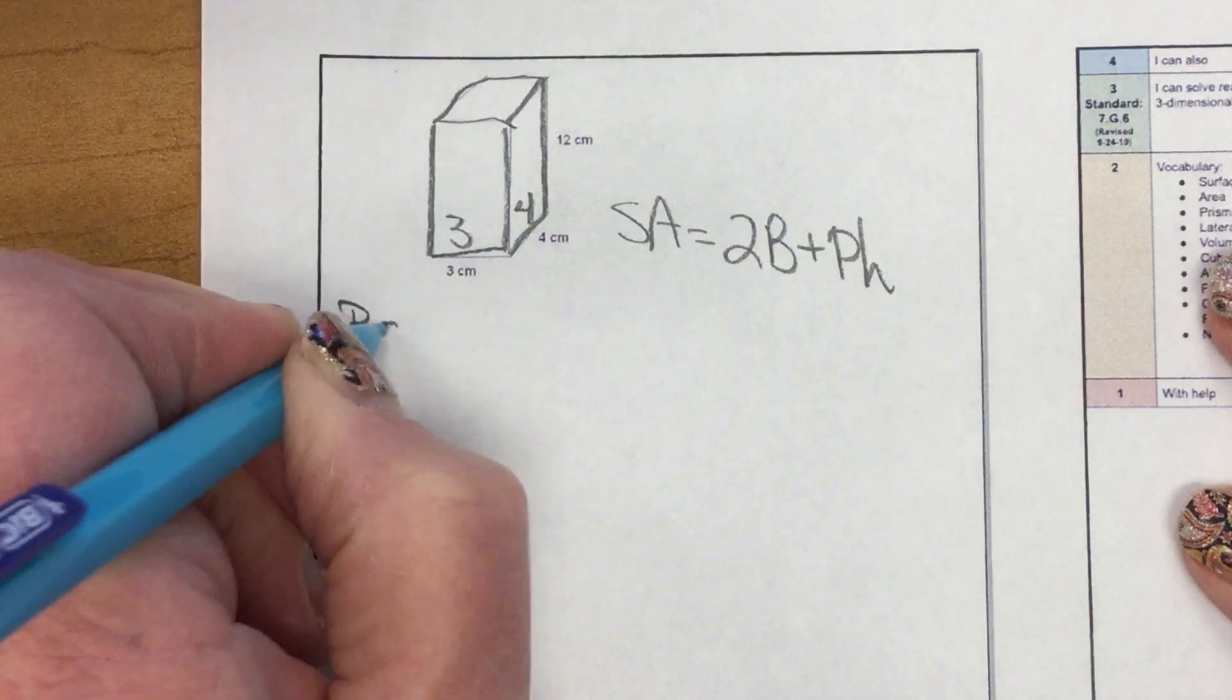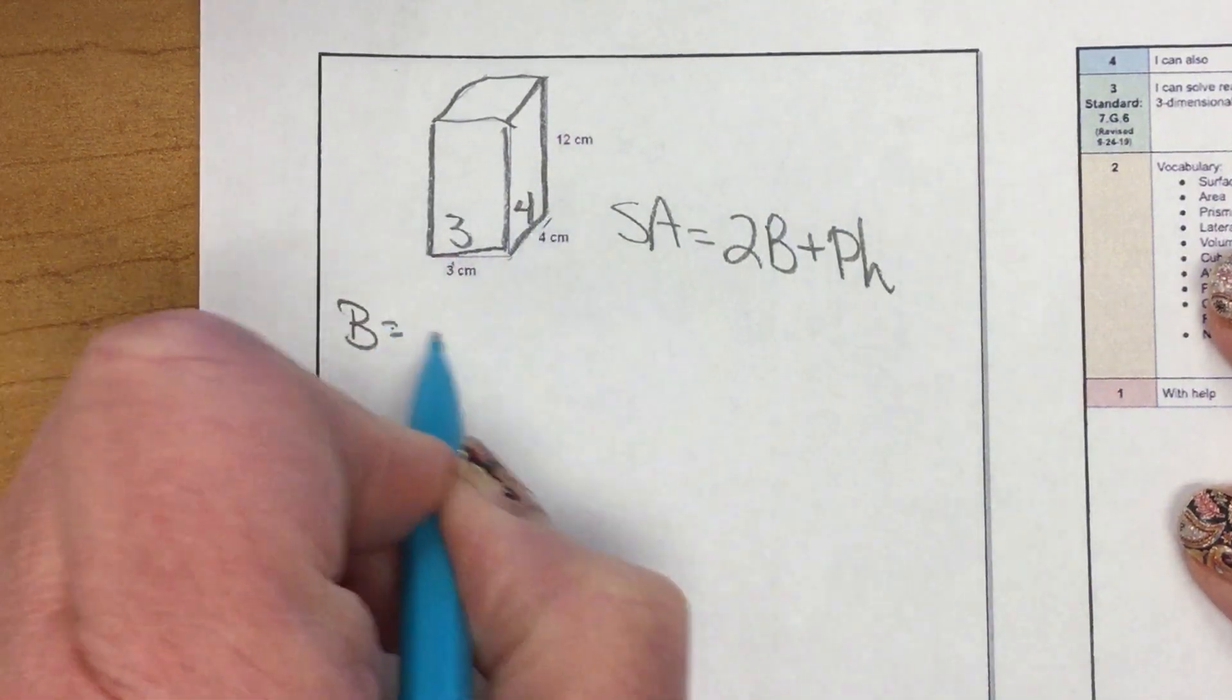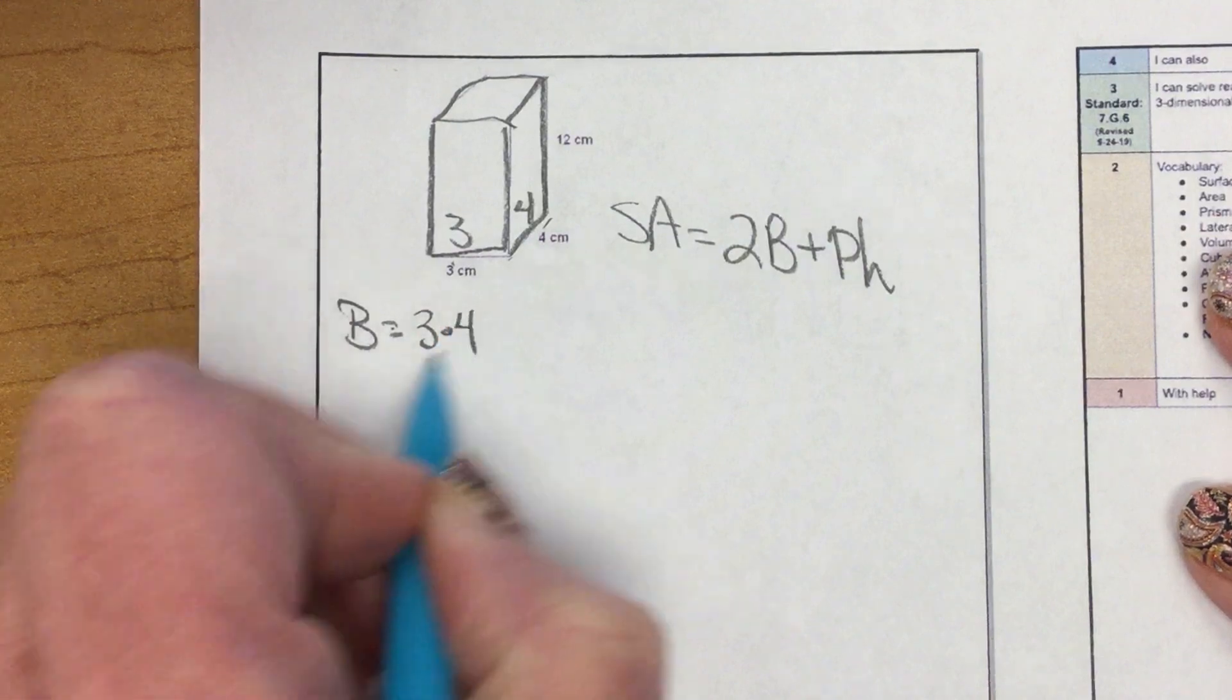Capital B, area of the base, length times width, three times four, 12.